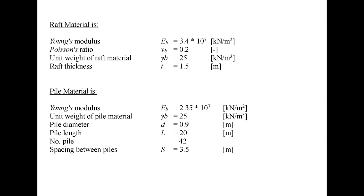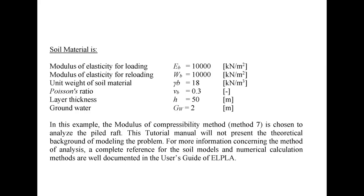For raft material, Young's modulus will be 3.4 × 10⁷, Poisson's ratio will be 0.2, unit weight of raft will be 25, and raft thickness will be 1.5 meter. For pile material, Young's modulus will be 2.35 × 10⁷, unit weight will be 25. For soil material, modulus of elasticity for loading will be 10,000 kN/m².